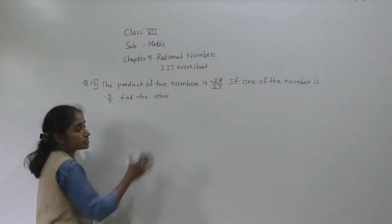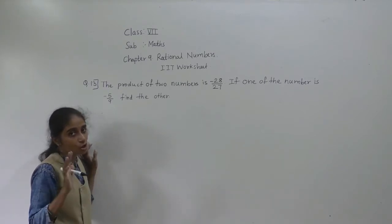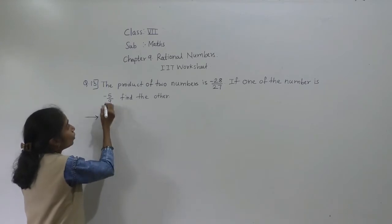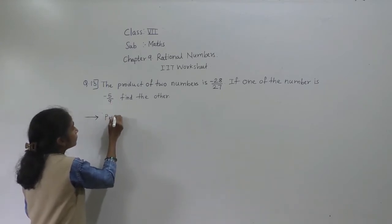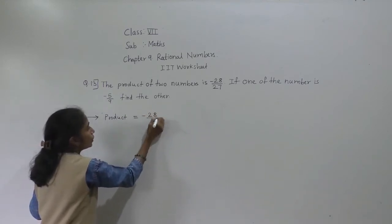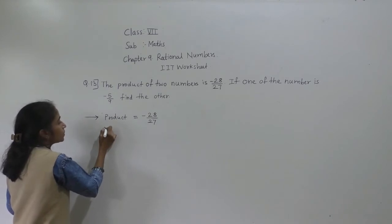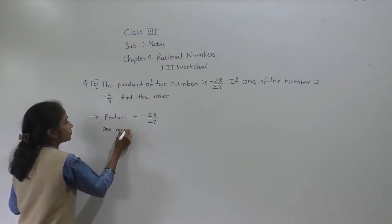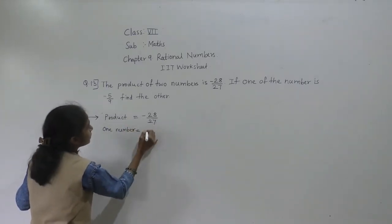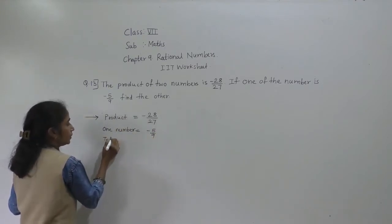Product of two numbers — what is meant by product? The answer in multiplication is called product. So the product of two numbers is minus 28 upon 27. One number is given as minus 5 upon 9. What is asked? Find the other number.